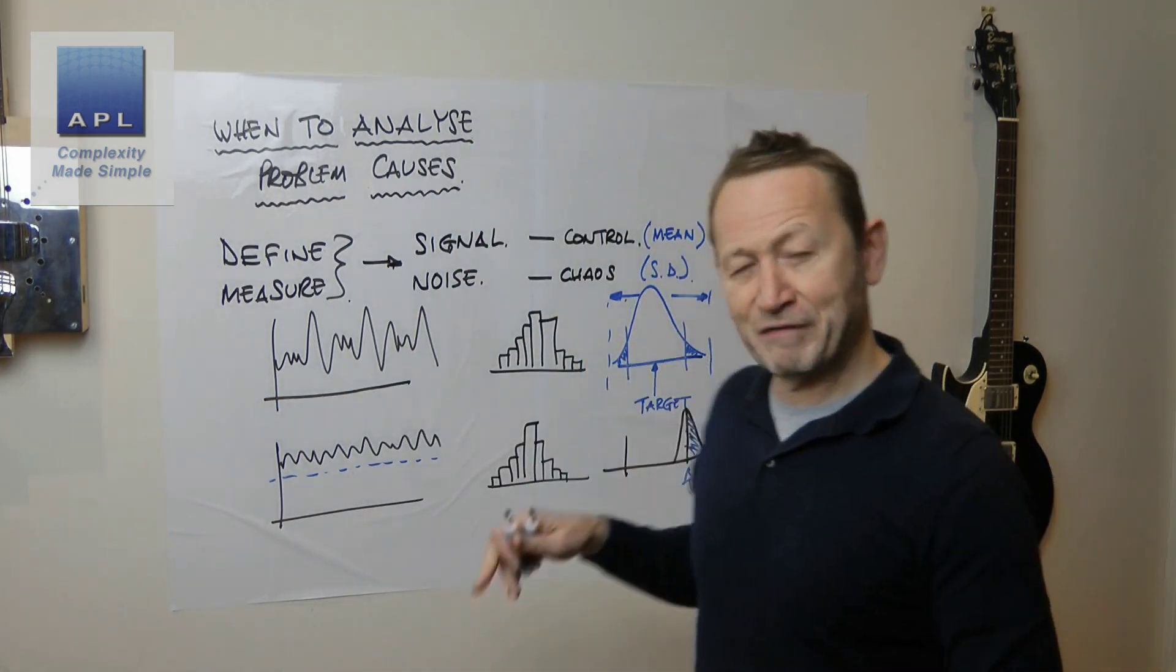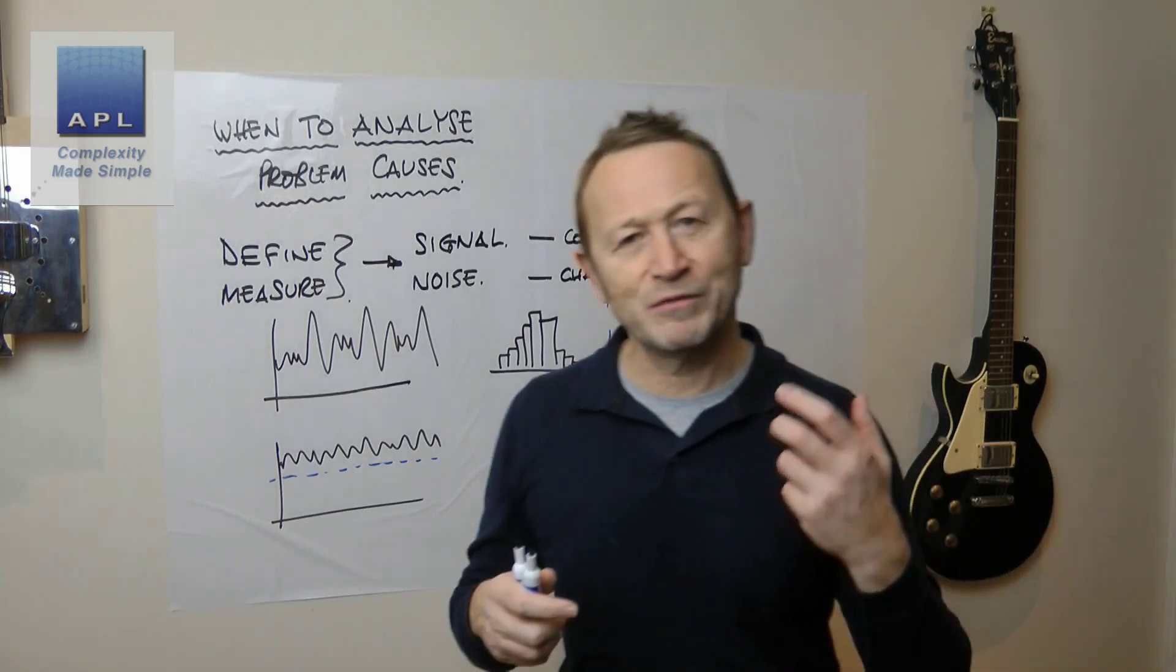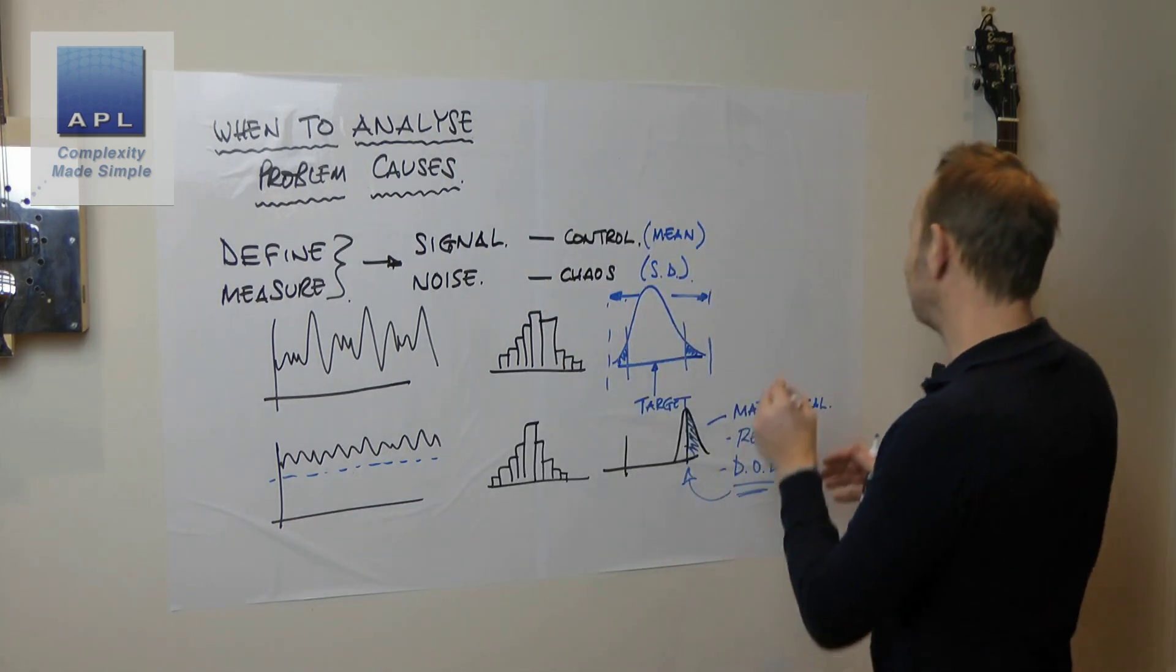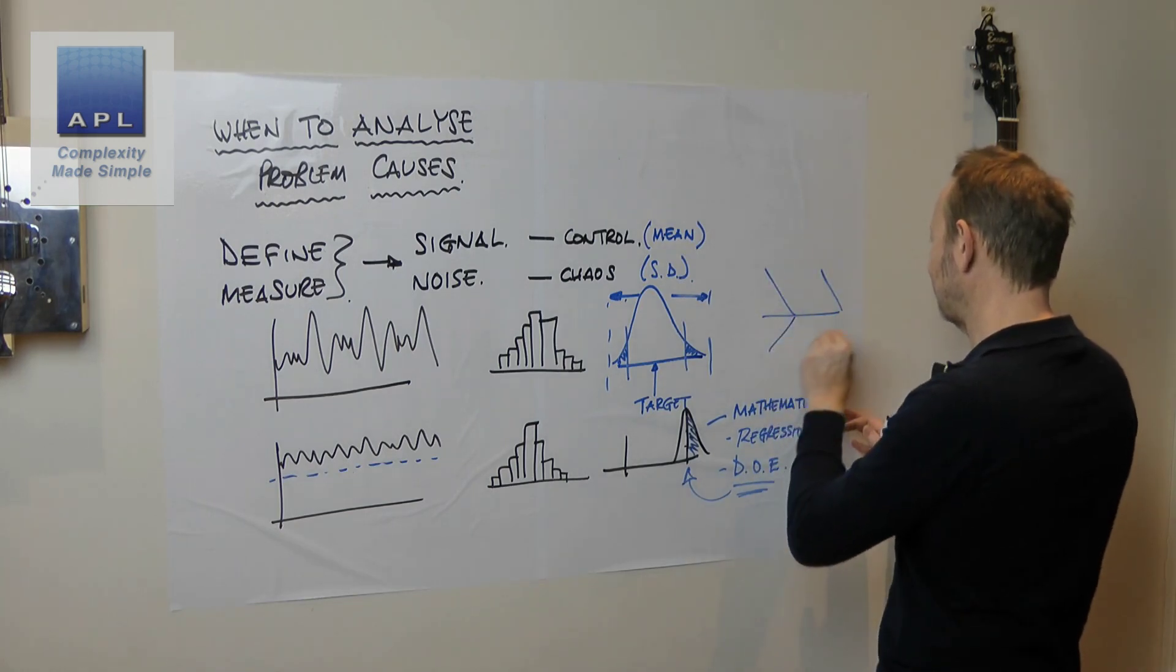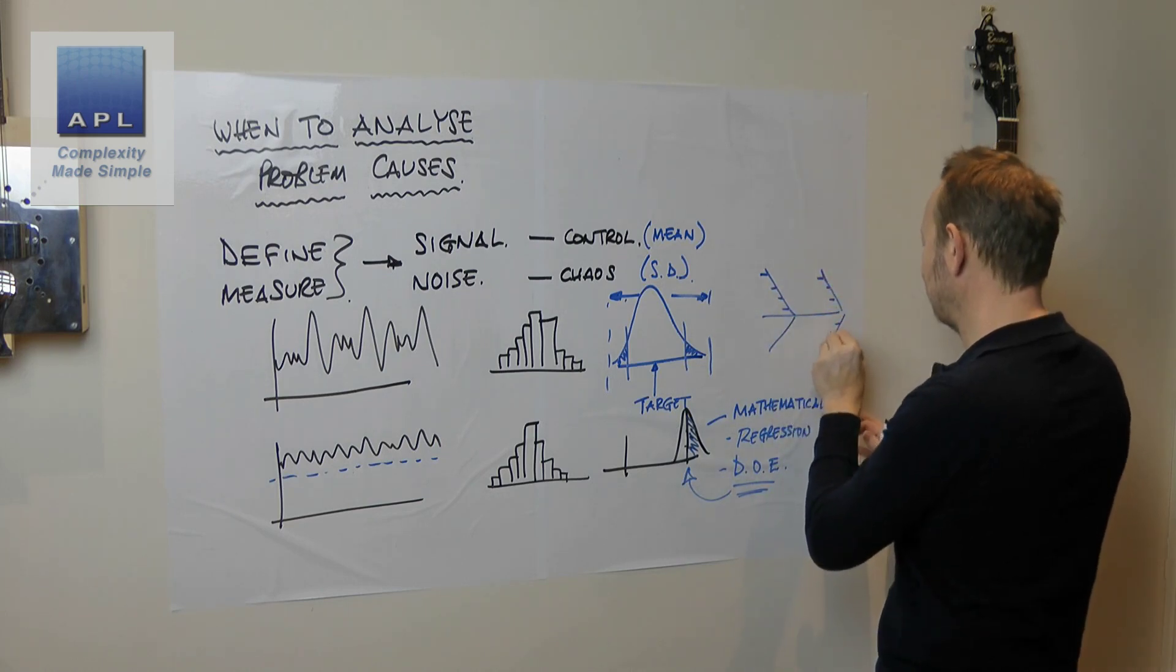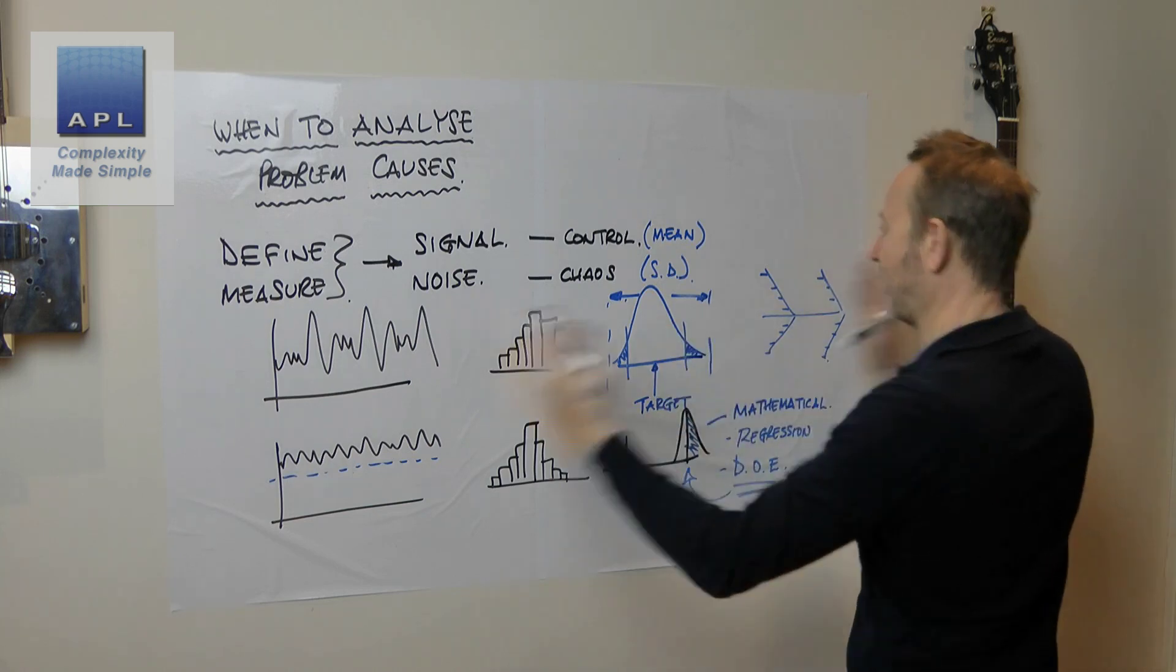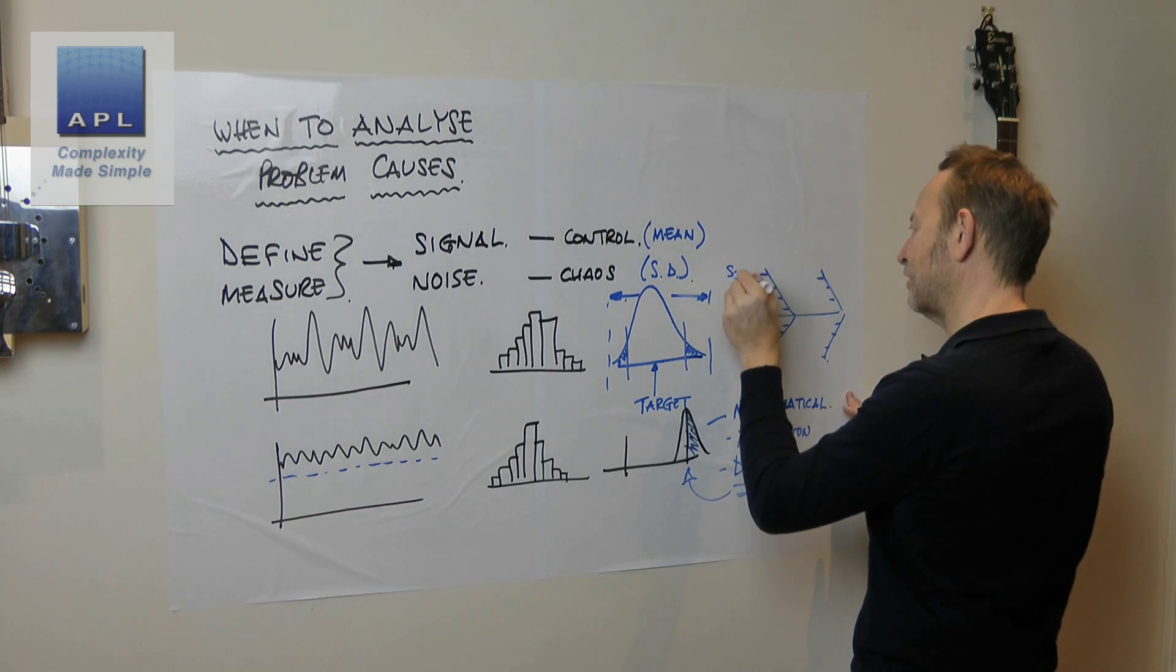This problem, however, this is a different problem altogether. Now, this is a problem of noise. It's a problem of control. What we need to do here is we need to use a cause and effect diagram. And you need to identify every variable in the process that creates this problem that creates the noise here. So these would be things like settings, speed, temperature, etc.